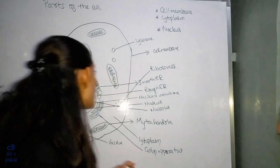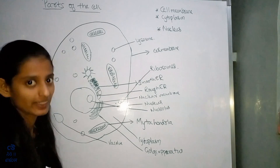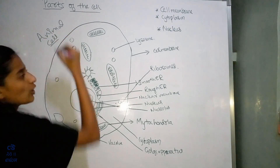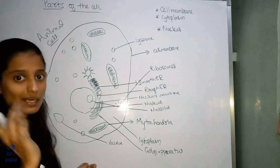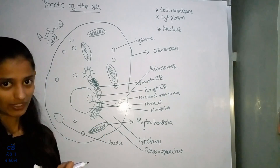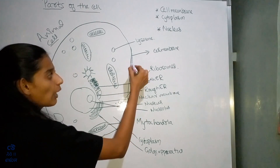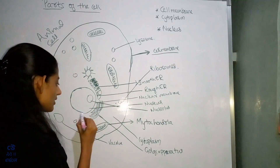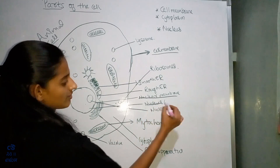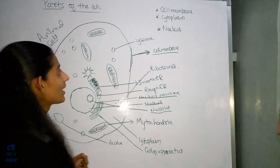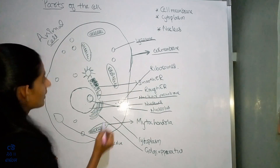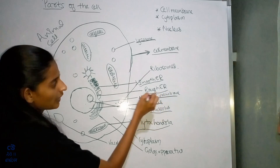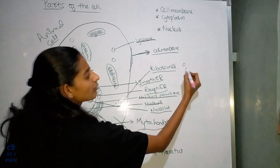Now let's know about the parts of the cell. A cell is made up of cell membrane. The outer layer is known as cell membrane, and this is the nuclear membrane, and this is the nucleus, and this is the nucleolus. Other parts are lysosome, and here this is mitochondria, smooth endoplasmic reticulum, and this is rough endoplasmic reticulum — ribosomes you can find them like this.